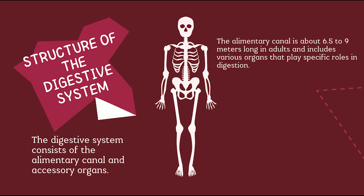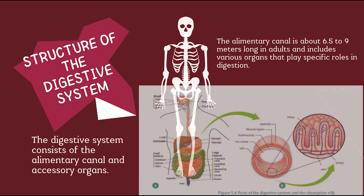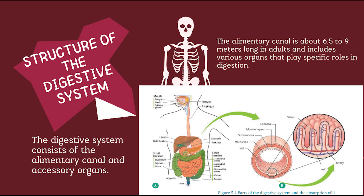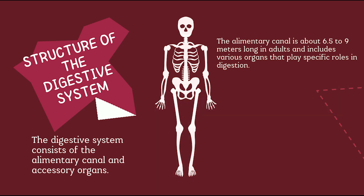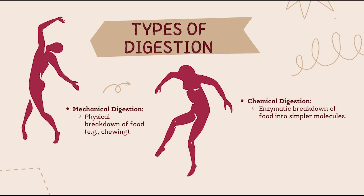The alimentary canal includes the mouth, esophagus, stomach, small and large intestine, rectum, and anus. The accessory organs support digestion but food doesn't pass through them. The entire canal is about 6.5 to 9 meters long. There are two types of digestion: mechanical digestion — physically breaking food down, for example by chewing — and chemical digestion, which uses enzymes and acids to break down large molecules into smaller ones. Both types start in the mouth.